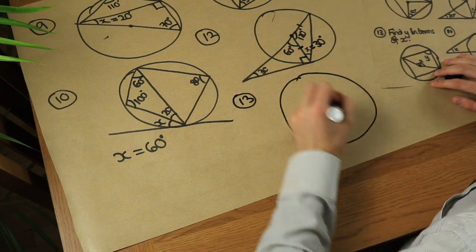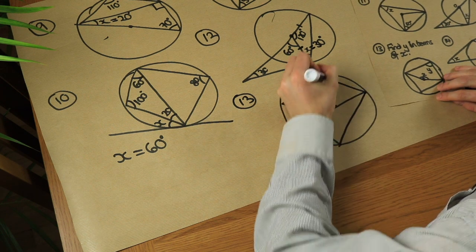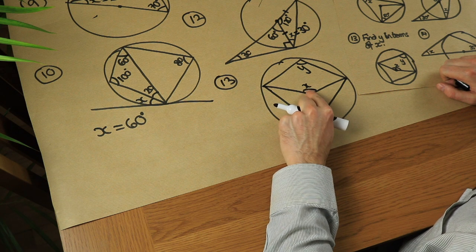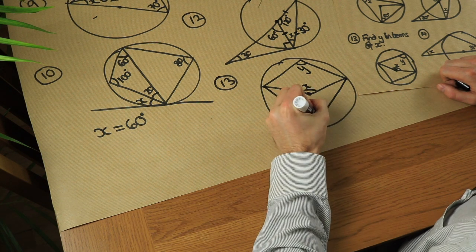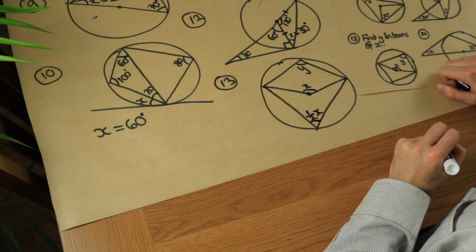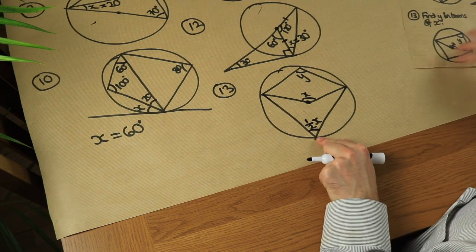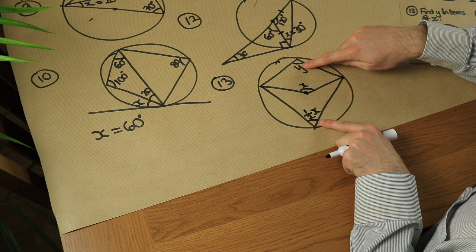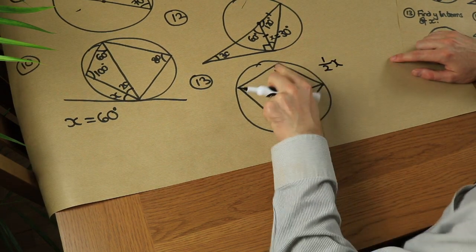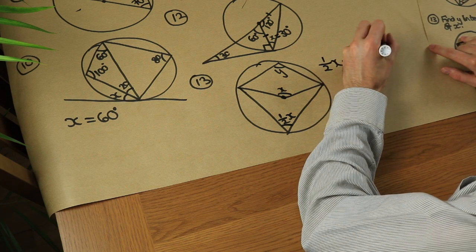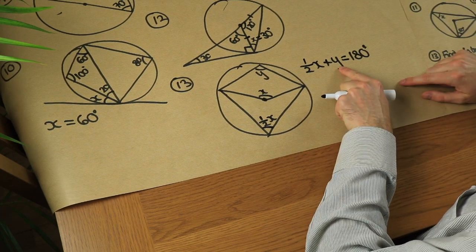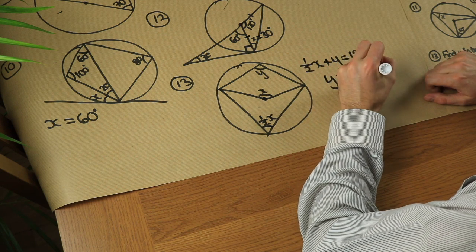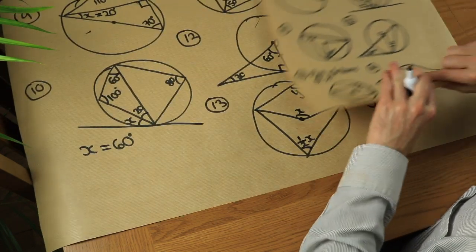For question thirteen, an algebraic problem: if the angle at the centre is x, then the angle at the circumference is half x. This is a cyclic quadrilateral, so opposite angles add to 180 degrees. Therefore half x plus y equals 180. Solving for y: subtract half x from both sides, giving y equals 180 minus half x.